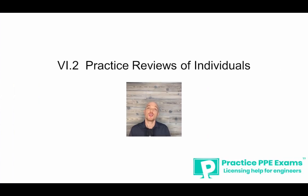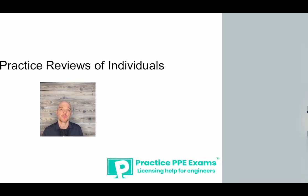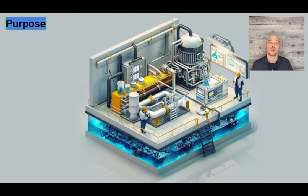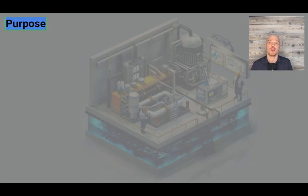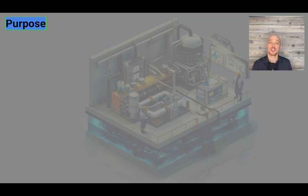Section 6.2 covers the practice review of individuals. The purpose of a practice review is to protect the public by reviewing the practices of professional members to ensure standards are being met. This may be done proactively, such as auditing continuing education hours, or by the request of the board if the member has been disciplined or if a member is resuming practice.